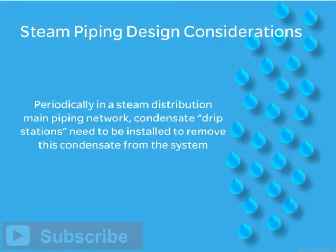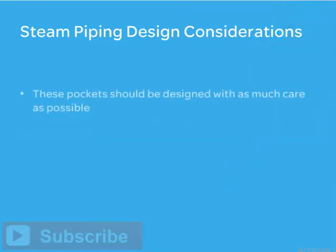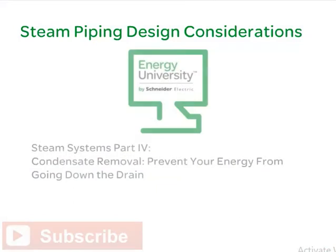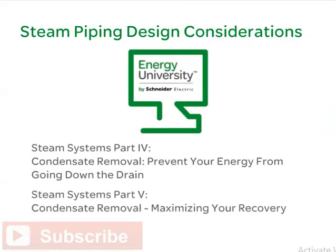Periodically in a steam distribution main piping network, condensate drip stations need to be installed to remove condensate from the system. These pockets should be designed with as much care as possible, allowing condensate a low point in which to drop out of the steam flow and be removed by steam traps. We will learn more about this in parts 4 and 5 of this series, including the energy efficiency value of recovering the condensate.